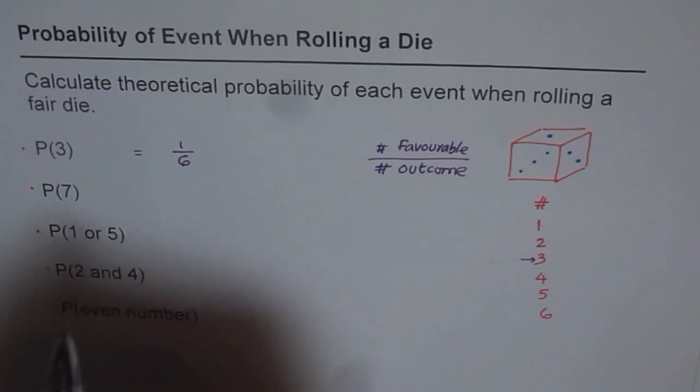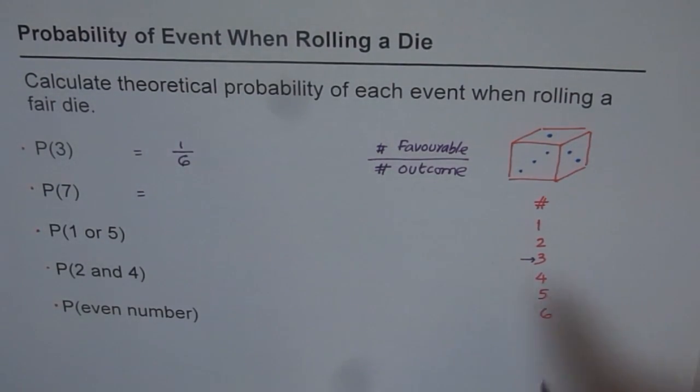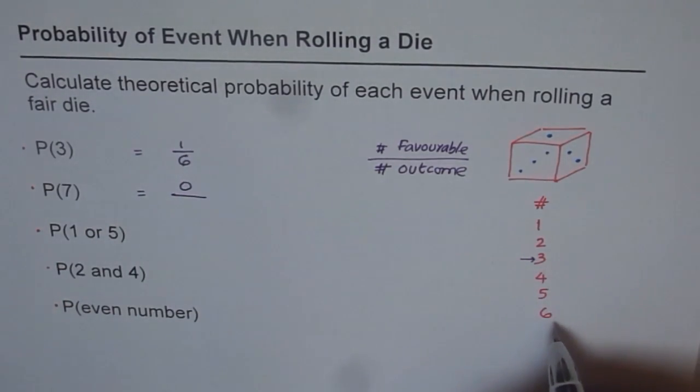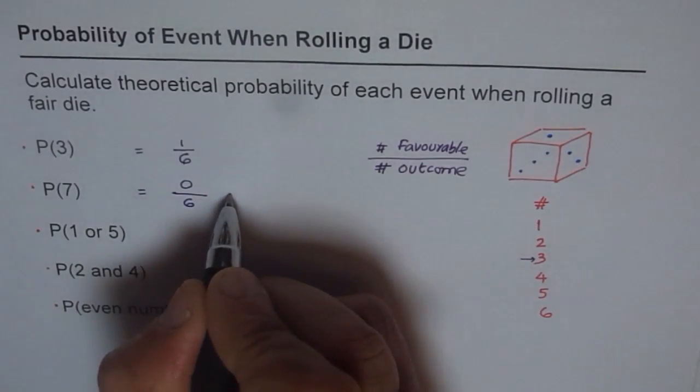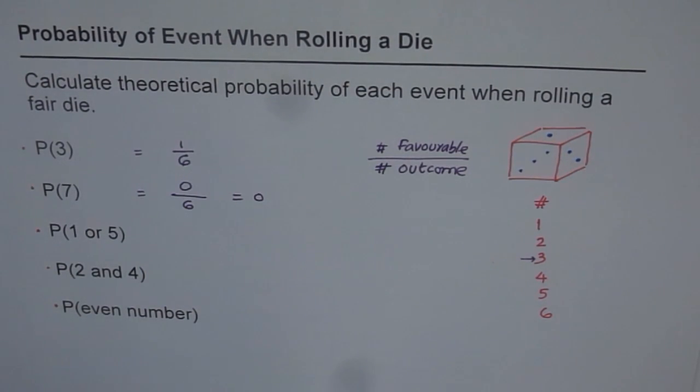Now the next question is, probability of rolling 7. Now, how many times do 7 appear here in the list? None. So it is 0. So it is impossible to roll 7 here in this case. And total number which you could roll is 1 to 6. That is 6. So this is indeed 0. You cannot roll 7. So the chances of getting 7 with a 6-phase die is 0.